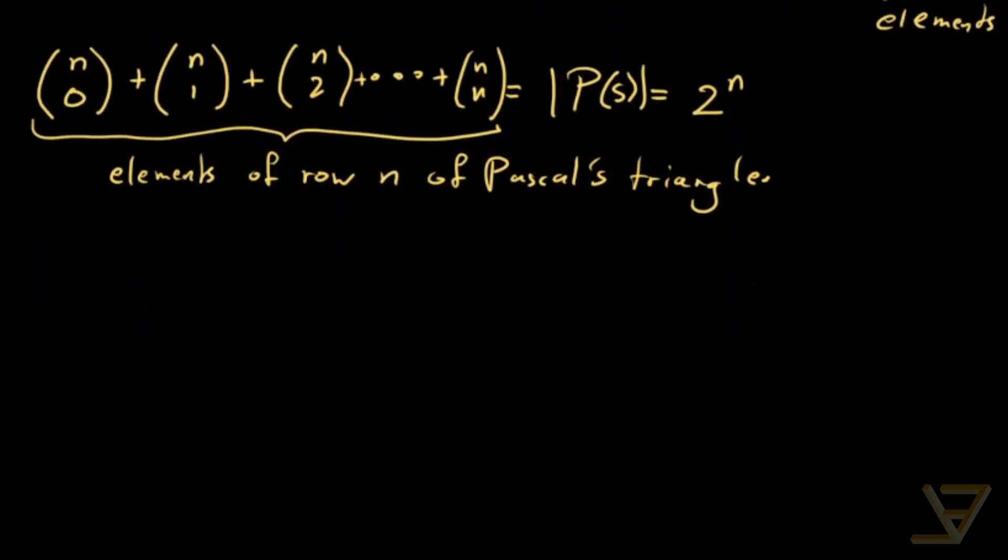The final proof that I want to show you, it's called an algebraic proof. So it's not quite as insightful as a combinatorial proof that we showed, but it's still useful in cases where we don't know how to find a combinatorial proof.